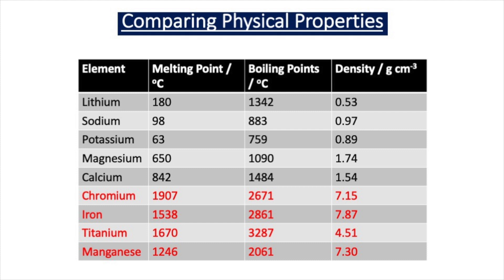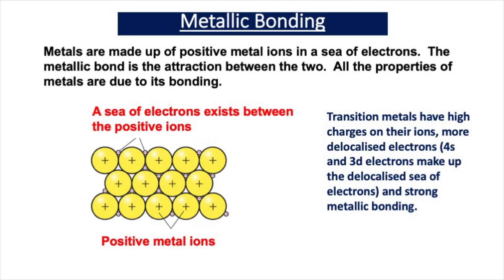All metals have metallic bonding, but the bonding in transition metals is a lot stronger than the bonding that exists in group one and two metals. Metals have metallic bonding, which consists of positive metal ions in a sea of electrons. The metallic bond is the attraction between the sea of electrons and the positive metal ions, and all the properties of metals are due to this bonding.